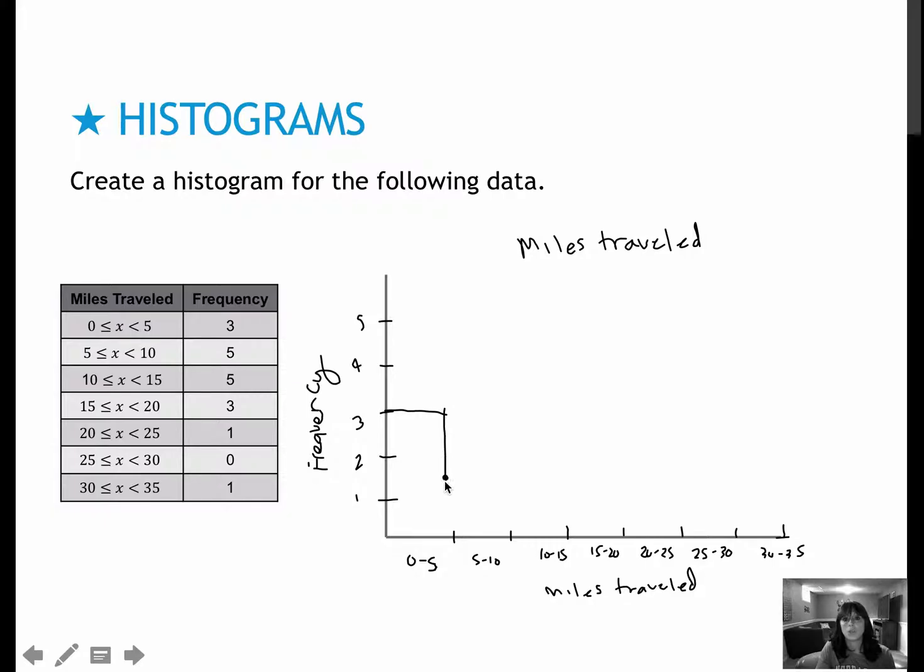The first one is 3, then 5. Again, way easier to do with a computer or at least with graph paper. 3, 1, 0, and 1. So it is important to leave that space so we know that there were no people who can travel 25 to 30 miles.